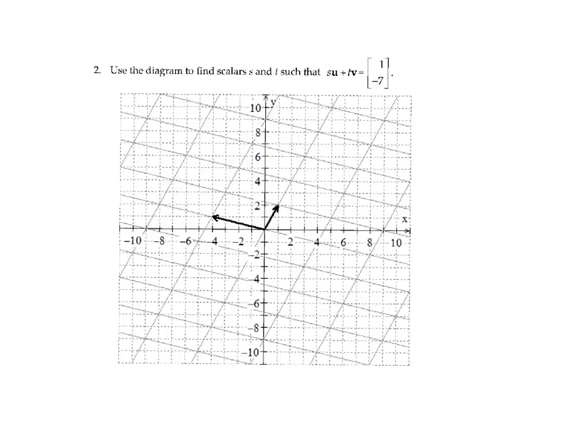In this practice problem, we'd like to find scalars s and t so that s times u plus t times v is equal to the vector 1 negative 7. And I want to take a graphical approach to the solution here.